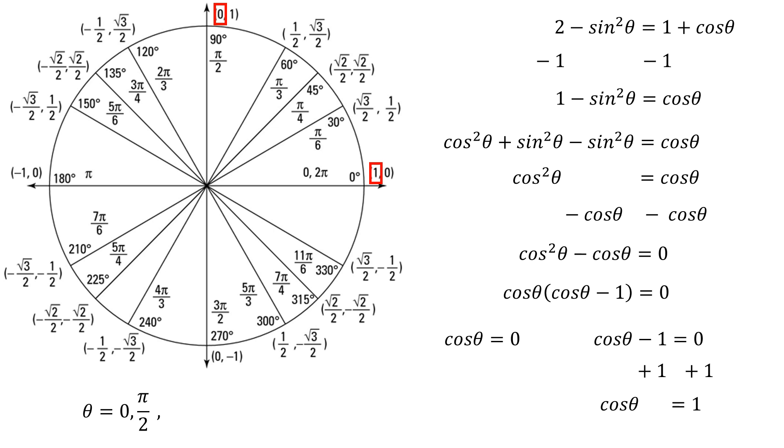And then my last stop will be at 3π over 2 because cosine of θ has a value of 0 at 3π over 2. So those are three solutions.